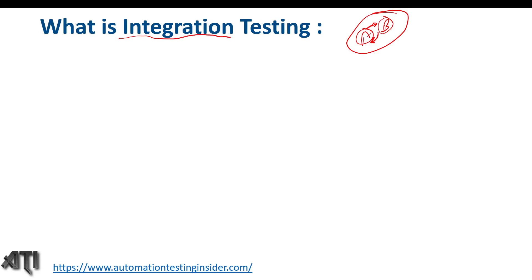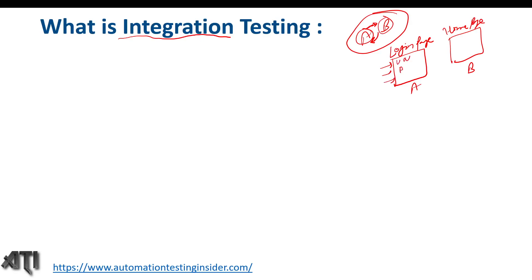In the previous video we talked about unit testing, and I used an example of website development. Let's say we are developing a website with a login page and a home page — this is Module A and Module B. When we enter a username and password and click submit, we navigate to the home page. The home page depends on the login page — until we provide username and password and click submit, we won't land on the home page. So these two modules are dependent on each other, and testing them together is integration testing.